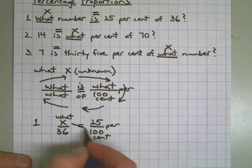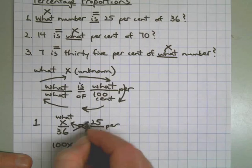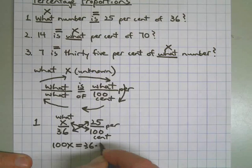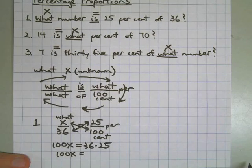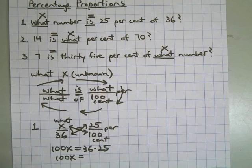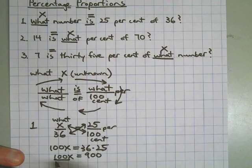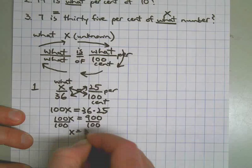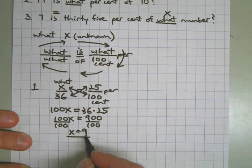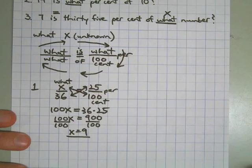We go ahead and solve it by cross-multiplying. And you can solve these any way you want, but if you don't have it set up right, then those ways won't work. And then we continue to simplify. Get my calculator out here. It's the end of the day. My mental math skills aren't quite there on 36 times 25. It's 900. Divide both sides by 100. And x equals 9. So to answer the question, 9 is 25 percent of 36.